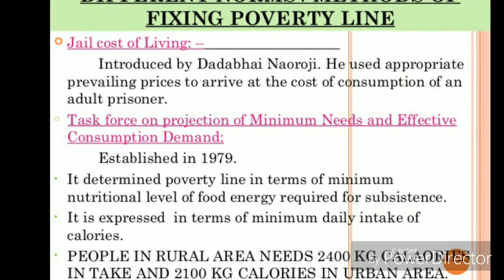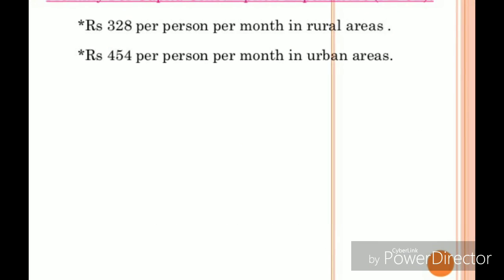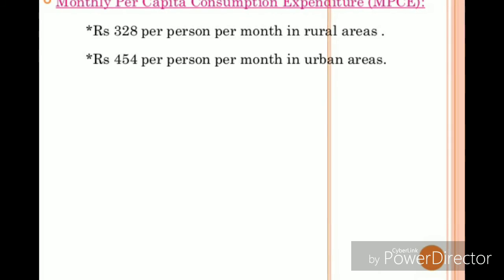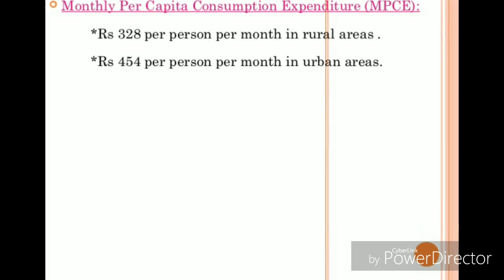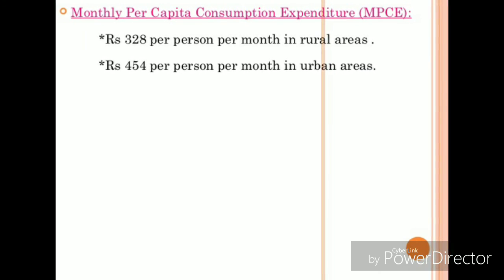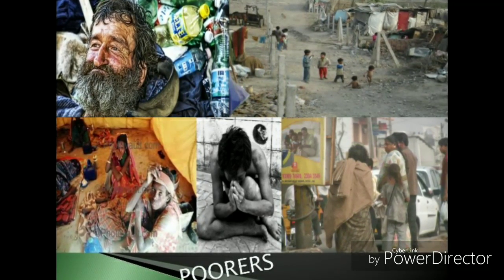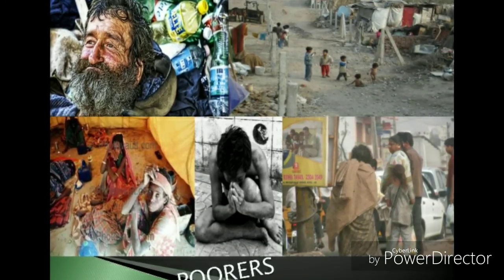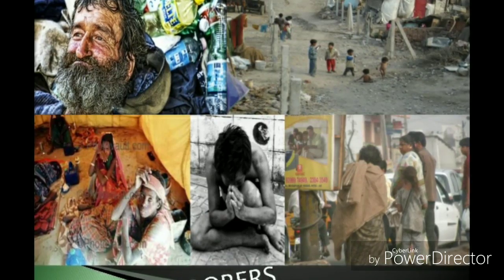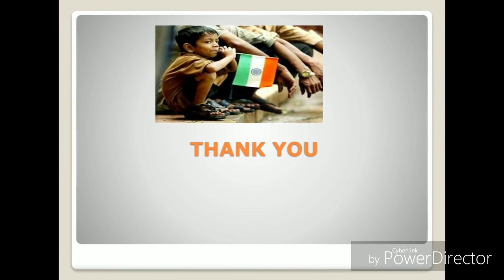The second method is minimum consumption expenditure. In rural areas, a person must have a consumption expenditure of 860 rupees monthly, that is 32 rupees daily. In urban areas, it must be 1407 rupees monthly, that is 47 rupees daily. We have discussed minimum calorie consumption and minimum consumption expenditure; the rest will be discussed in the next class. Thank you.